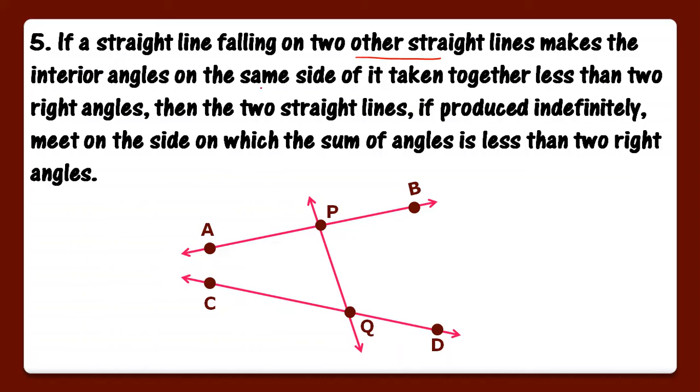Makes interior angles on same side of it. Suppose this is angle 1. These are interior angles and angle 2. Taken together less than two right angles. If we add these two angles together, then this sum is less than two right angles. Two right angles means 90 degrees plus 90 degrees, that is 180 degrees. So our angle 1 plus angle 2 is less than 180 degrees.